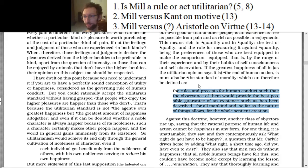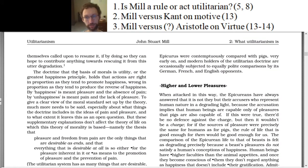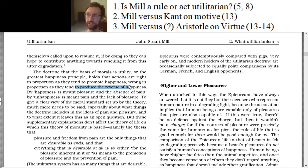Utilitarianism says pleasure and lack of pain for everybody. But if you read these two statements more closely, there are actually two different ways that you could read them. One way is that an action is right in proportion as it tends to promote happiness and wrong in proportion as it tends to produce the reverse of happiness. If you put a lot of emphasis on 'tend' — a tendency, what it normally does, what it typically does, what it usually does — some actions have a tendency to promote happiness or a tendency to produce pain, even if they don't always produce happiness or always produce pain.